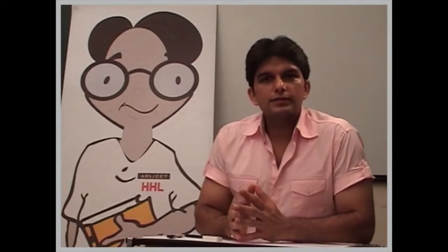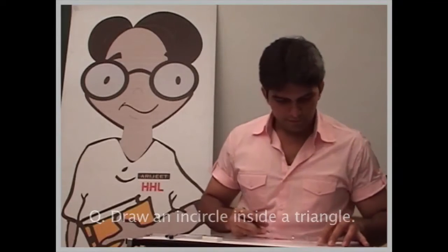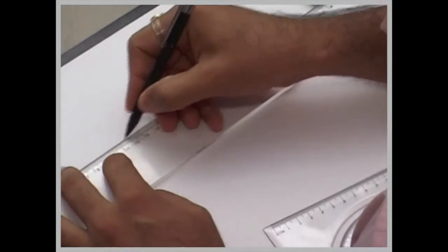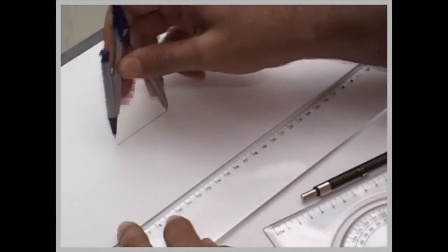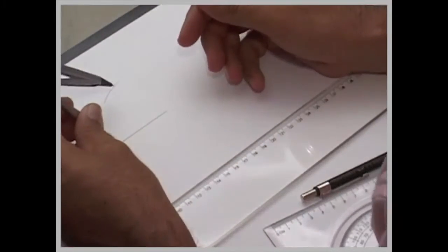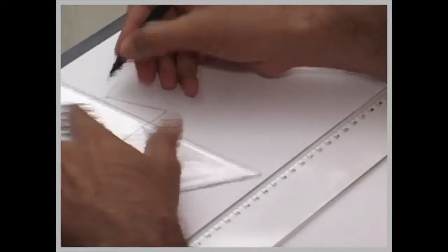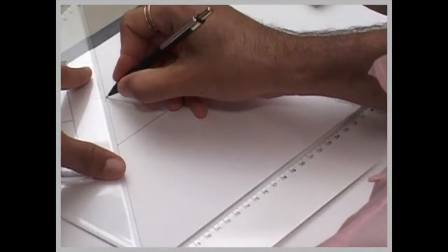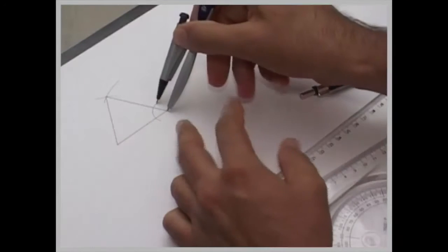Now we know how to draw a circle inside a triangle — an equilateral triangle — so we will just see that. First we draw a triangle of any side, then you bisect any one angle.